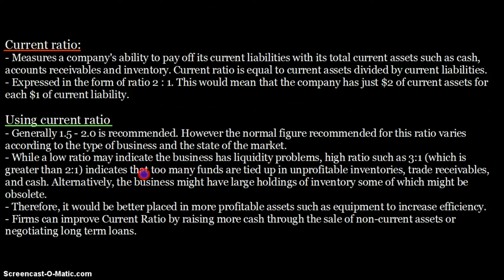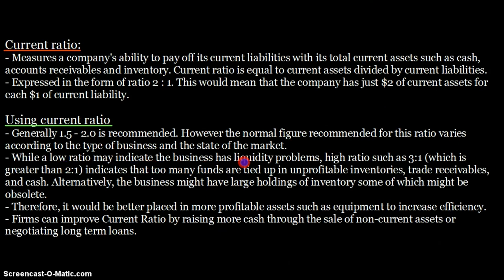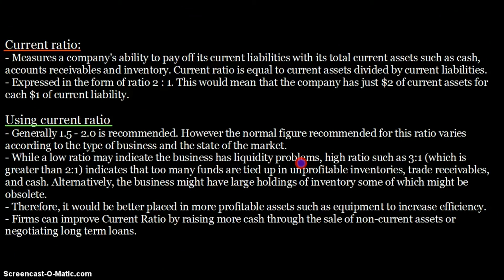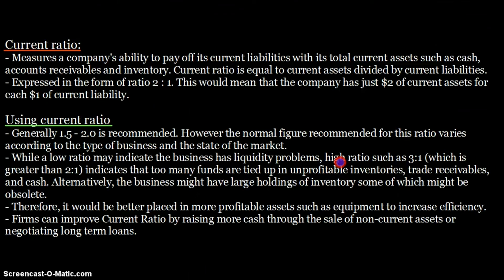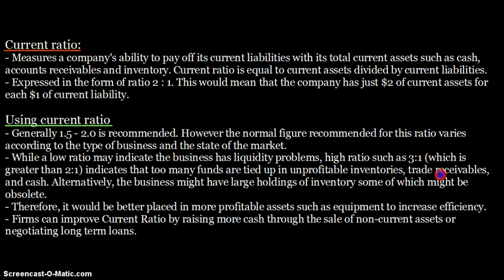The type of business matters too — some businesses naturally operate with lower ratios while others have higher ones. While a low ratio below 1 indicates a severe liquidity crisis where the business needs cash quickly to pay debts, a high ratio such as 3:1 indicates that too many funds are tied up in unprofitable inventories. Stakeholders and shareholders will be worried if the ratio is very low, and may sell their shares.